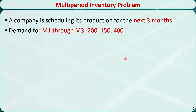A company is scheduling its production for the next three months. They already know the fixed demand for month 1 through month 3. There are 200, 150, and 400, respectively.